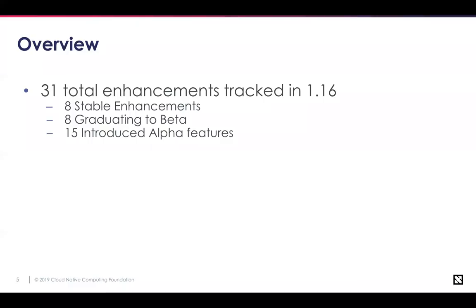We'll be touching on all these at a high level. In this release, we had 15 introduced as new alpha features — these are the ones people are very interested in because they extend Kubernetes in new ways. Then we have features graduated from previous versions to beta, meaning they went through another release cycle of testing and bug fixing. And we have eight graduated to stable — a great sign compared to only two graduating to stable in 1.15. This indicates the trajectory toward a stable platform rather than always introducing new features.